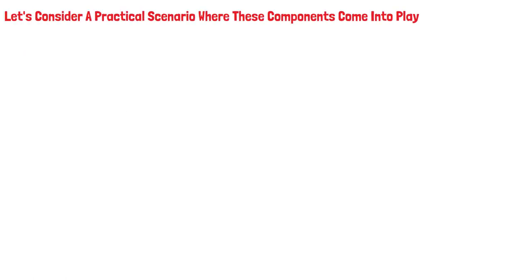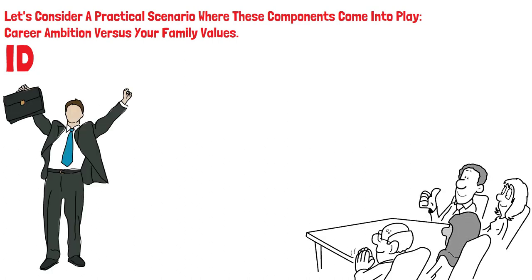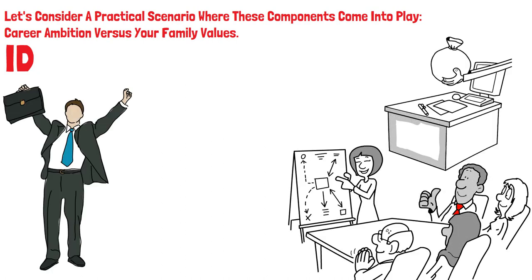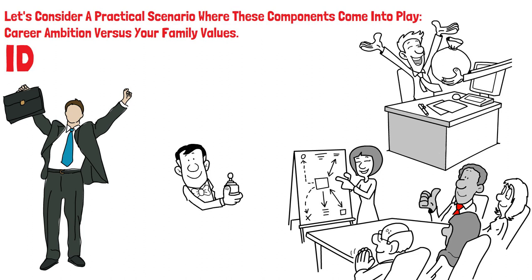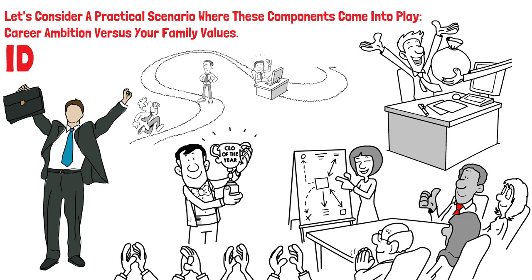Let's consider a practical scenario where these components come into play. Your career ambition versus your family values. Your id may drive your ambition for career success without thinking of anything else. It's the part of you that craves recognition, financial stability, and professional accomplishments. It urges you to pursue career goals with vigor and enthusiasm.